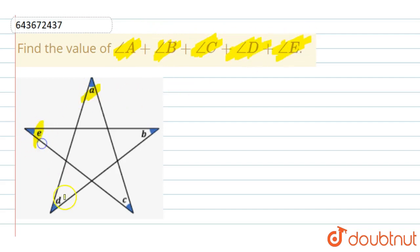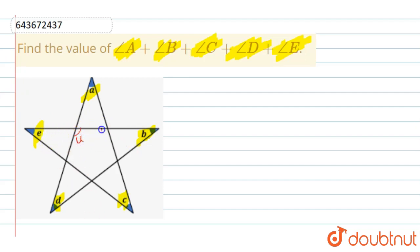So those angles are A, B, C, D, and E. First of all, we should mention the interior angles. This interior angle is U, this angle is V, this is W, this will be X, and this will be Y.